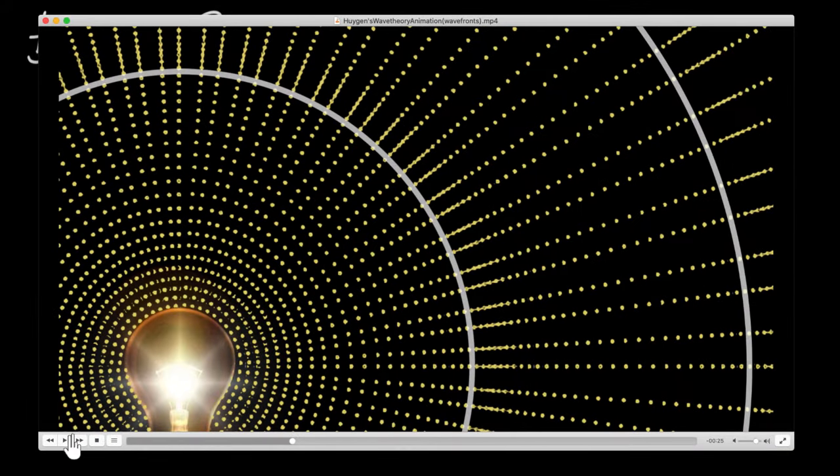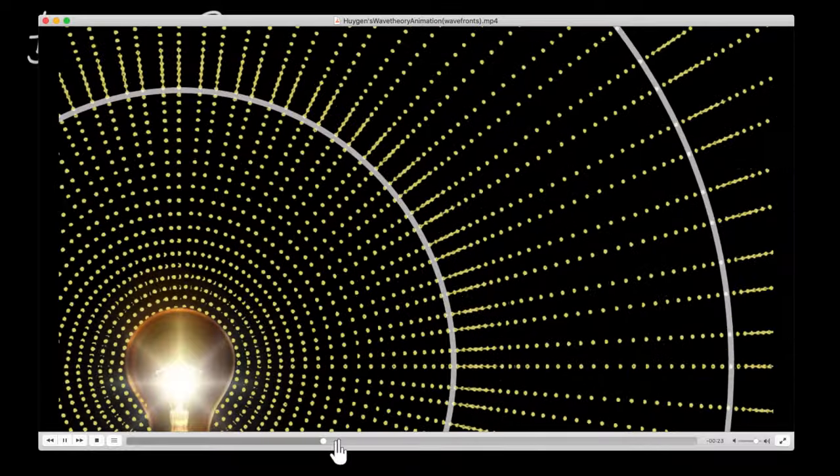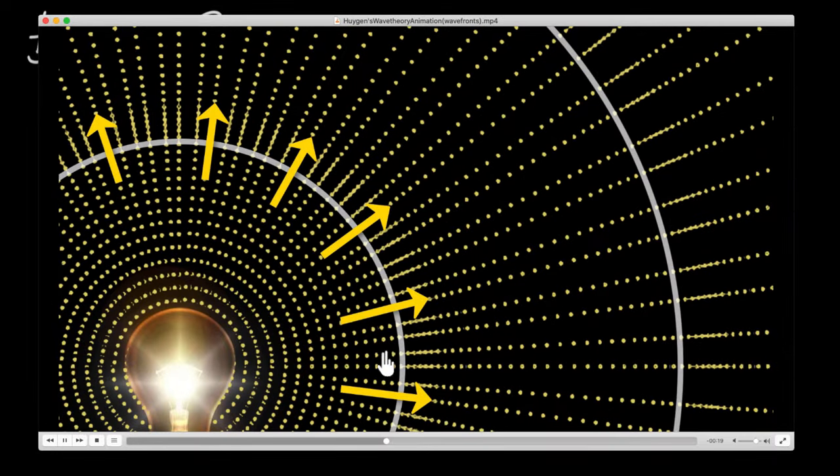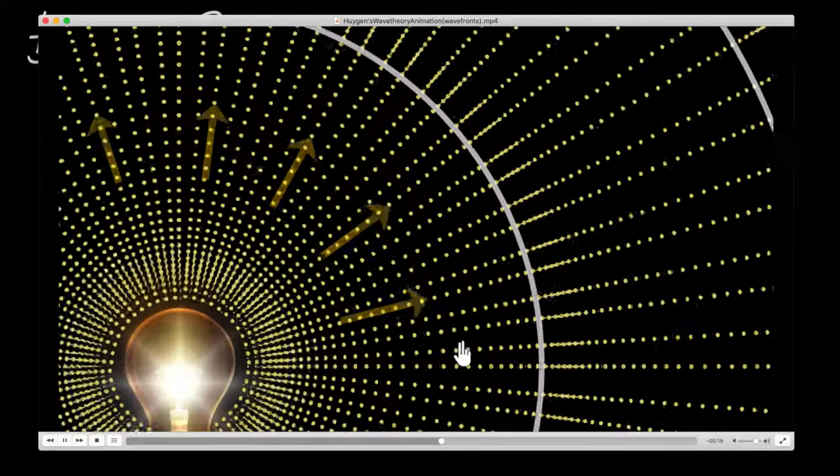And one of the important things that we saw about the wave fronts is that the angle between the direction on which light is traveling, the rays of light and the wave fronts, that is always perpendicular. Look at this. The rays of light and the wave fronts at every point will be perpendicular to each other. That's important. That's going to be important for this video as well.